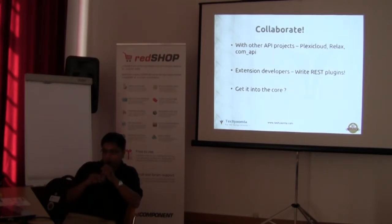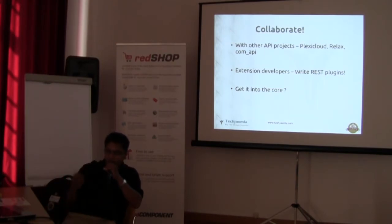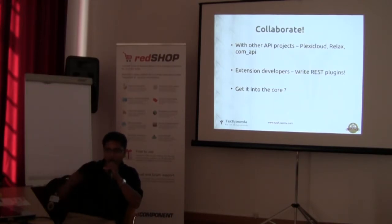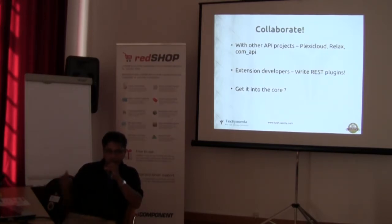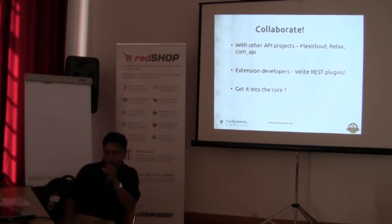I'm open to collaborating with anyone using Plext Cloud, Relax, or similar projects to make sure we have just one API extension for Joomla. You might be wondering why I worked on this when Nooku exists — but the thing is, for existing extensions which are not built on Nooku there's a problem. I was talking to Johan yesterday — it's not straightforward to create a REST API server for Joomla using Nooku. Until 100% of extensions are built on Nooku, we definitely need some kind of server for Joomla. That's the Molajo school of thought as well.